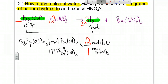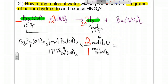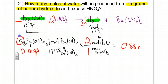We want to go from moles of barium hydroxide to moles of water, so we put moles of water at the top using our coefficients: 1 barium hydroxide to 2 waters. Because they want moles and that's what we have, we're finished setting up. To calculate: 75 divided by 171.35 times 2 gives 0.875. Because this is two sig figs, our answer is 0.88 moles of water.